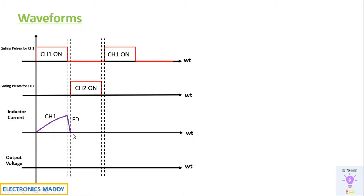In the next cycle, CH2 is on, so the current flows in the opposite direction — from load to source — resulting in negative current. The energy stored in the inductor is then discharged, so the current decreases in magnitude. It was increasing in the negative direction due to CH2 charging, and now it discharges through diode D when both CH2 and CH1 are off, with CH2 having been previously on.